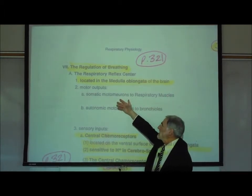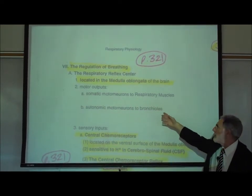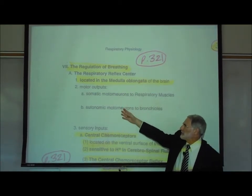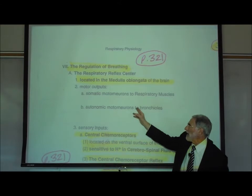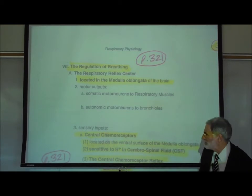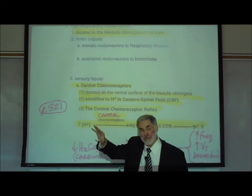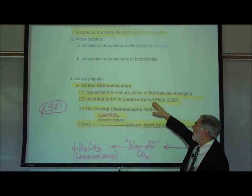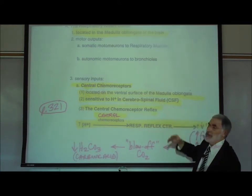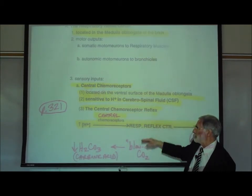The respiratory reflex center includes somatic motor neurons to the respiratory muscles — the diaphragm and intercostal muscles — for breathing, and can activate autonomic motor neurons to the bronchioles affecting bronchoconstriction or bronchodilation. The most important sensory input comes from the central chemoreceptors, located on the ventral surface of the medulla oblongata, sensitive to hydrogen ion concentration in the cerebrospinal fluid.